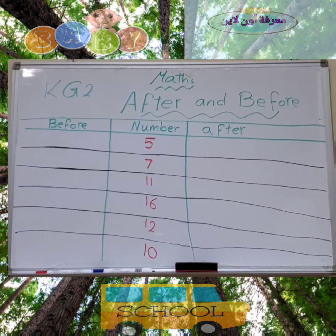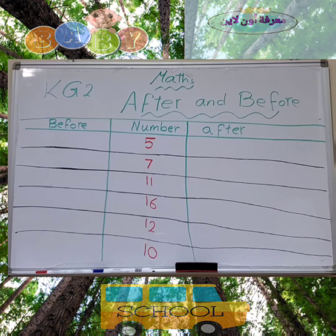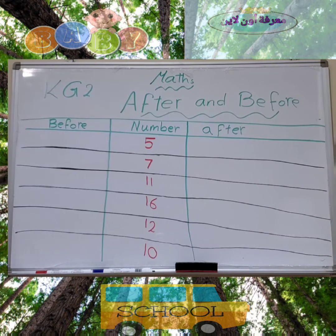First we must know how we can count in order from 1 to 20. Let's count together: 1, 2, 3, 4, 5, 6, 7, 8, 9, 10, 11, 12, 13, 14, 15, 16, 17, 18, 19, 20.